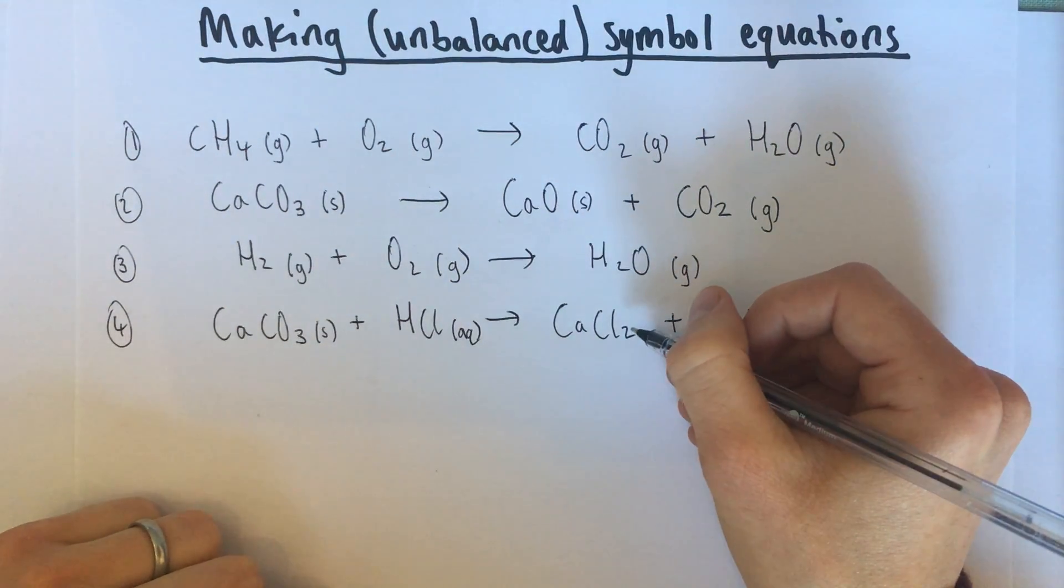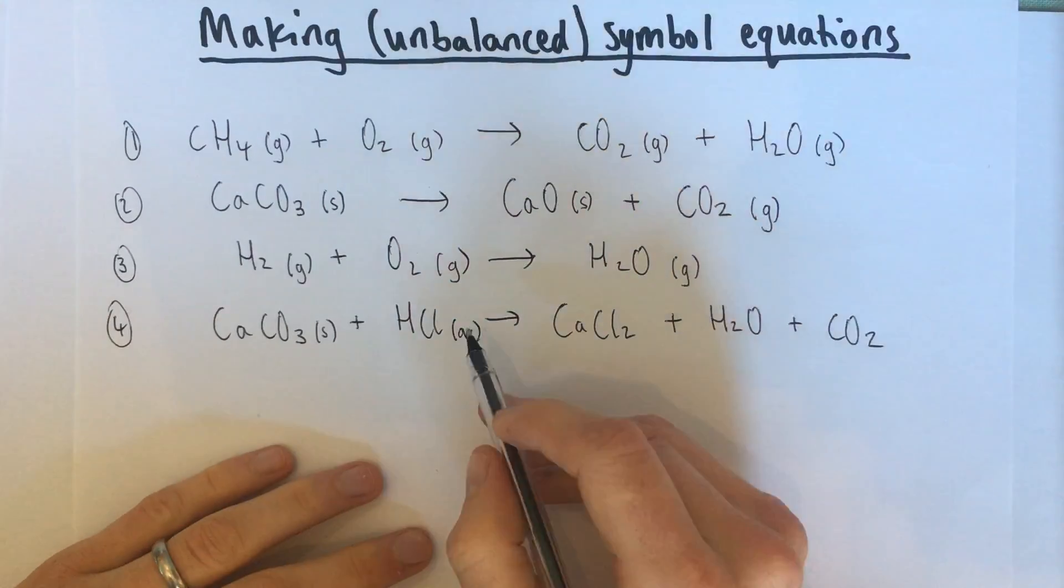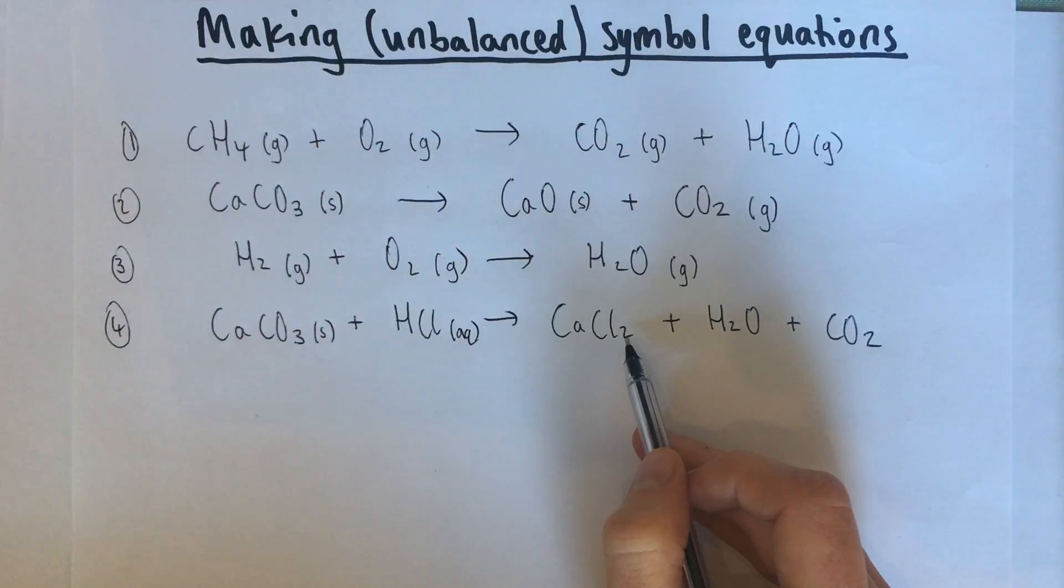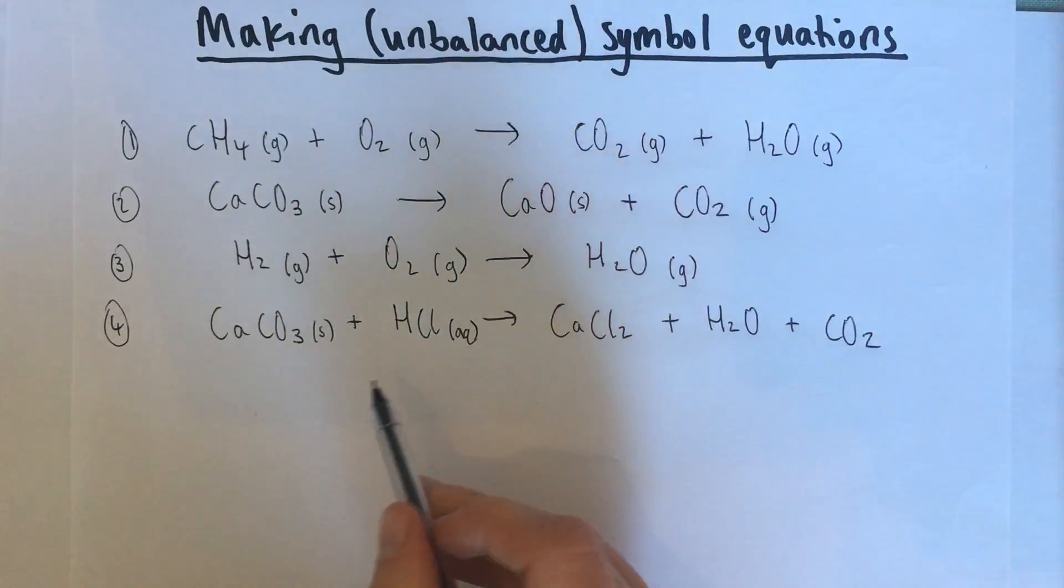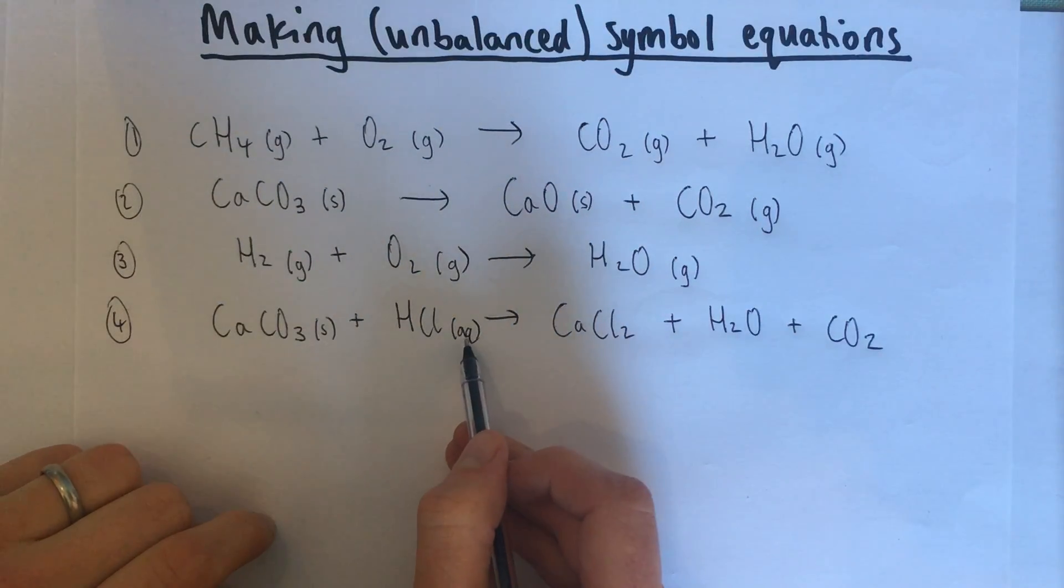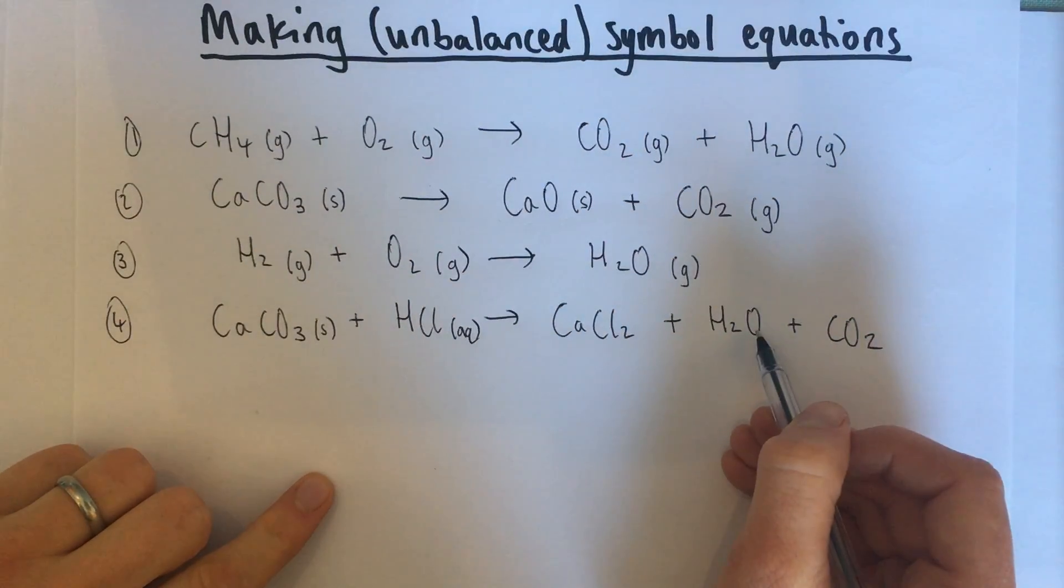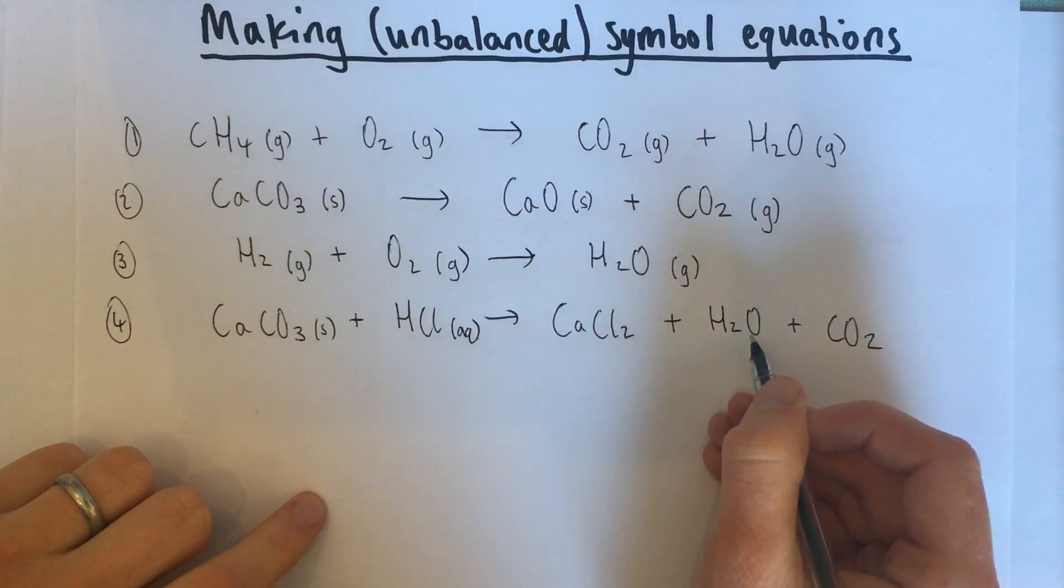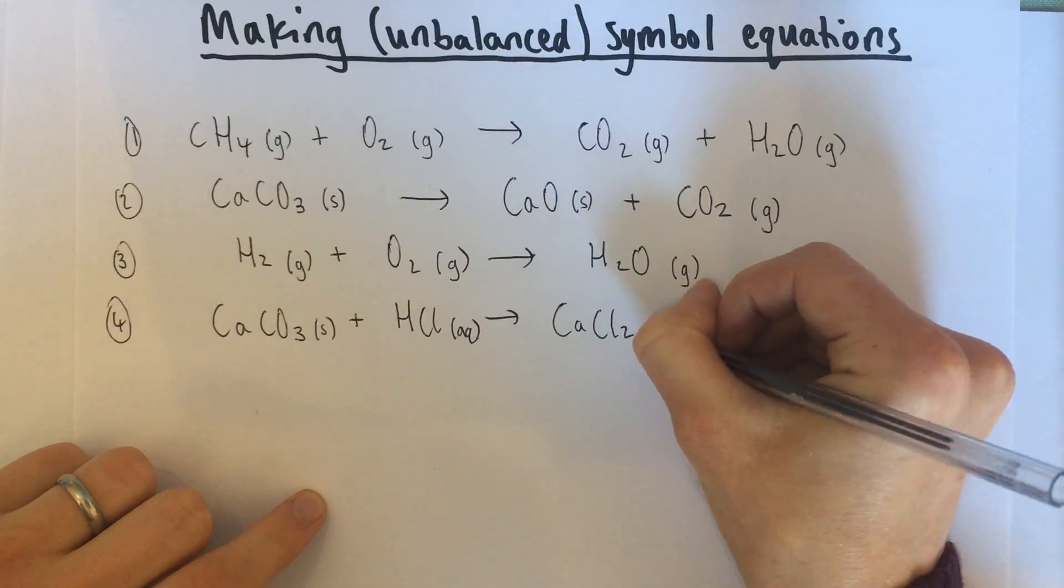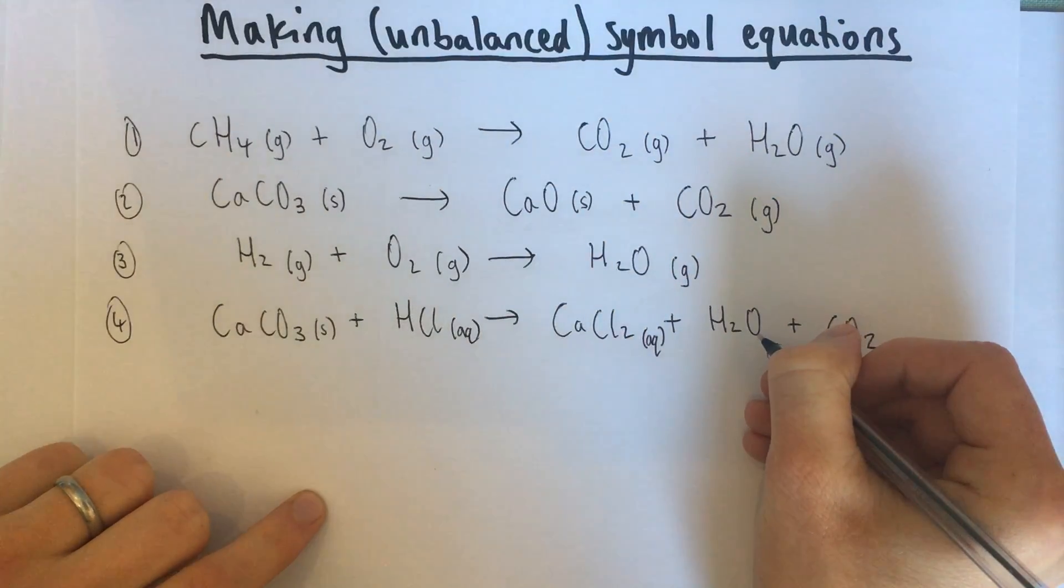Calcium chloride is a solid that we make in this reaction, but a lot of ionic compounds like calcium chloride are soluble in water. Now, this reaction has got water because the hydrochloric acid was dissolved in water and we make water. So because we've got water around, this ionic compound isn't going to be a solid. It's going to be aqueous. It's going to be dissolved in that water.